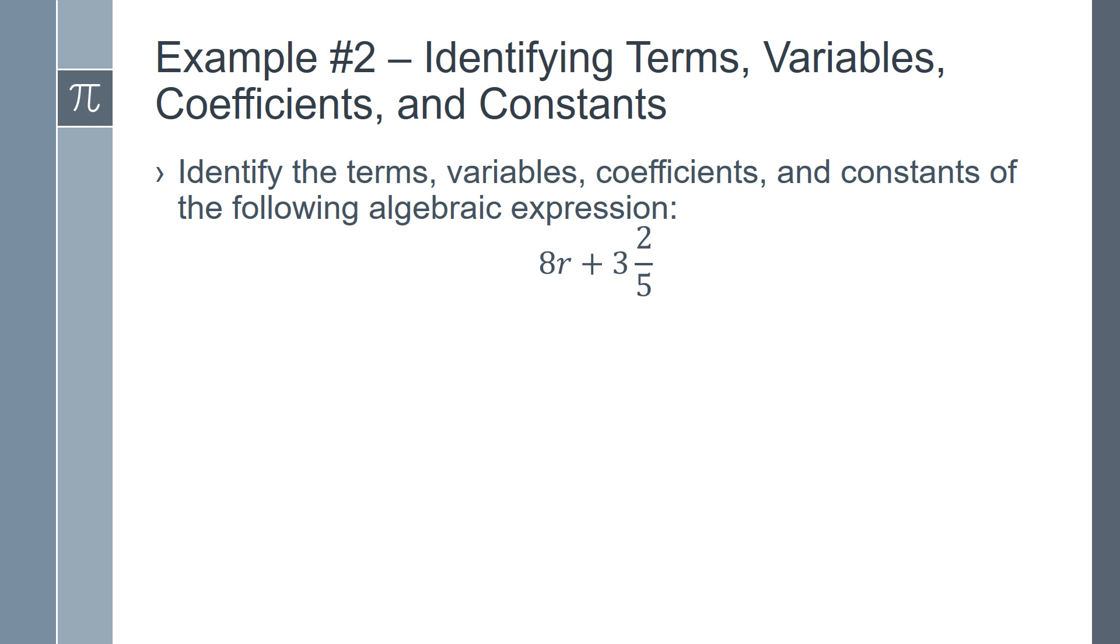We will use the same process to identify the components of example number 2: 8r plus 3 and 2 fifths. We'll start with the terms. 8r and 3 and 2 fifths. Next the variable, which is r. The coefficient, which in this case is 8. And the constant term, which is 3 and 2 fifths.